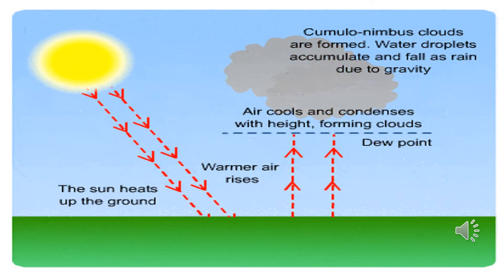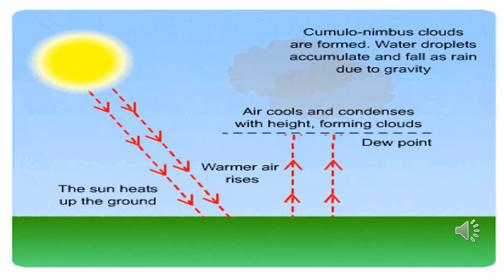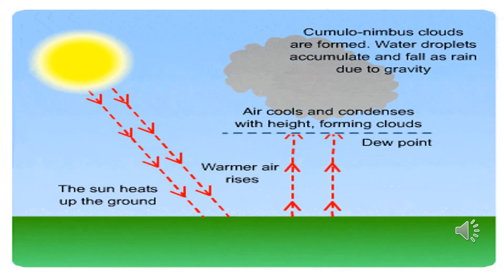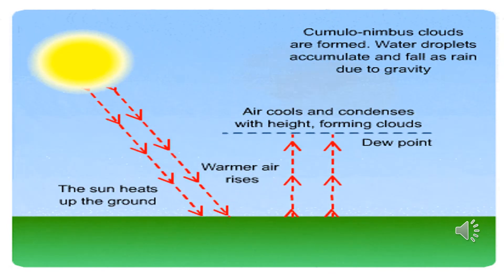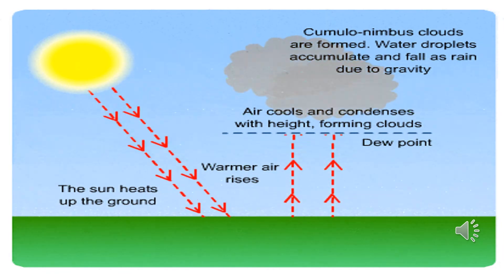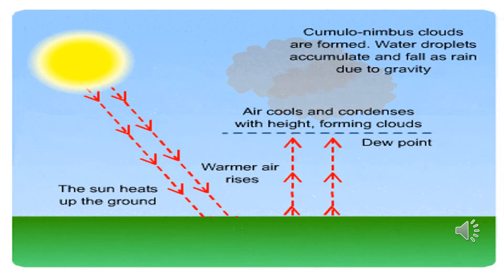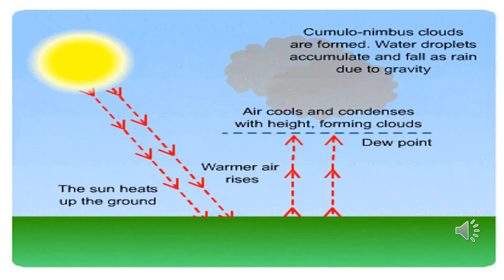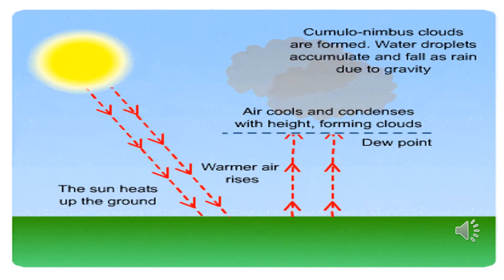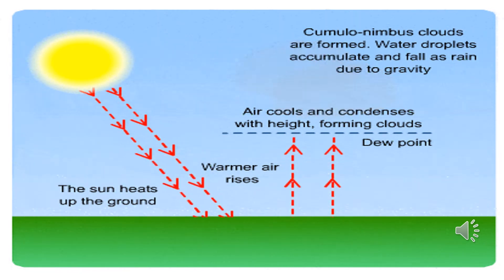Convection currents cause thunderstorms and rainfall in the northern and northwestern parts of Pakistan, occurring in the months of April to June and October to November. The surface of the earth is heated by the sun, and the warm surface heats up the air above it. Hot air rises, cools down at higher elevations, and condensation begins. As this process continues, more air rises and cools, causing large amounts of condensation, forming heavy clouds that produce heavy rains with thunder and lightning.